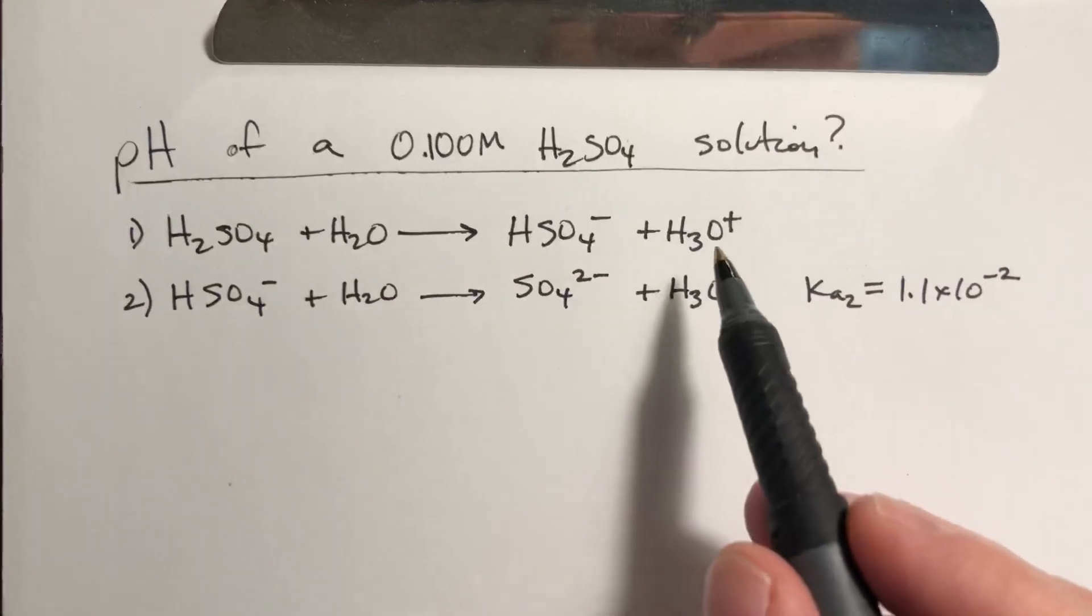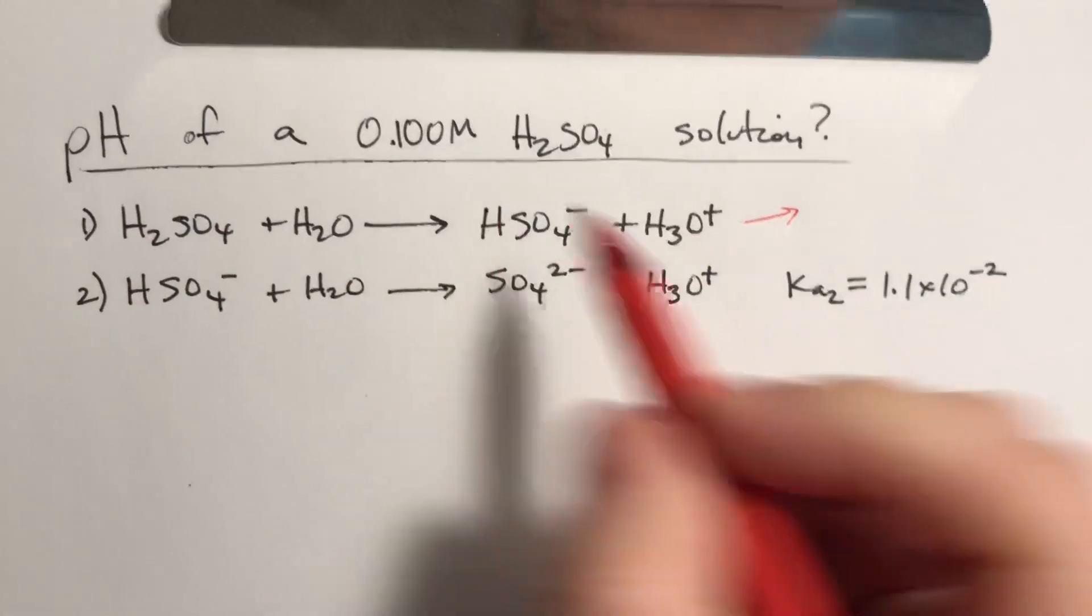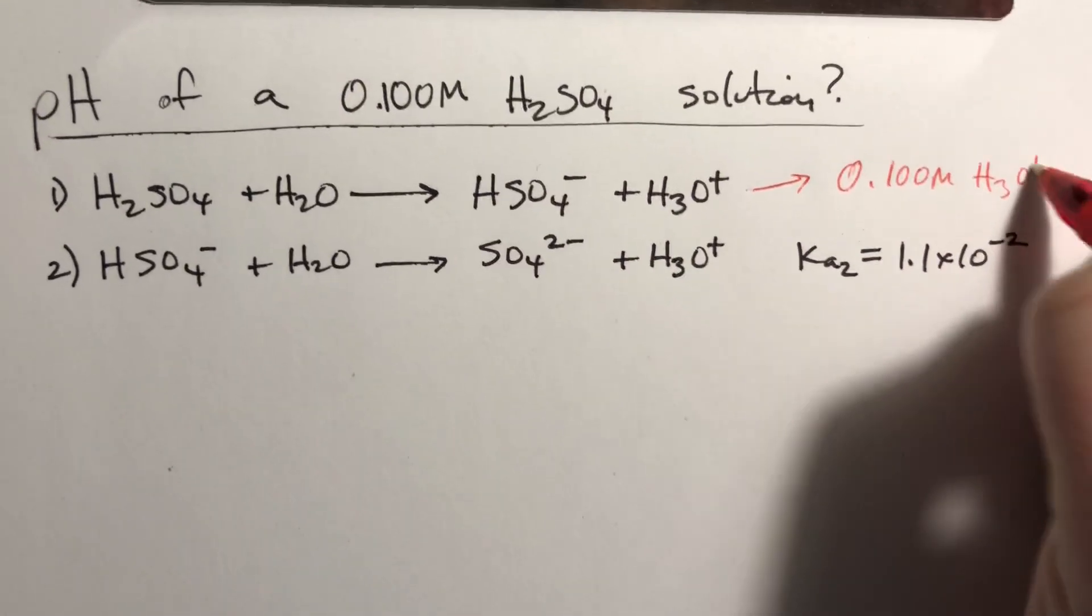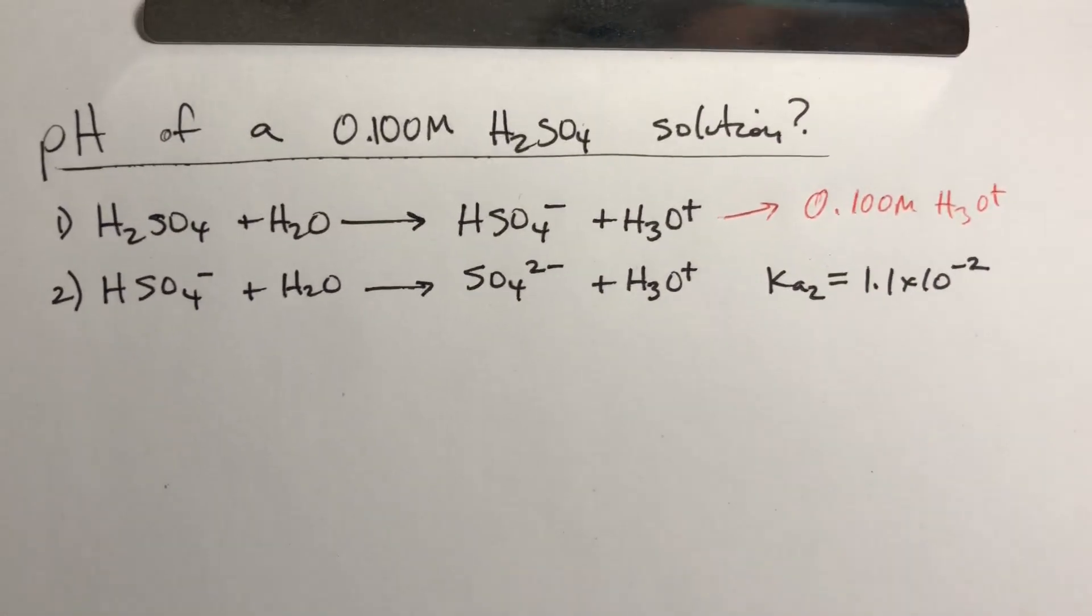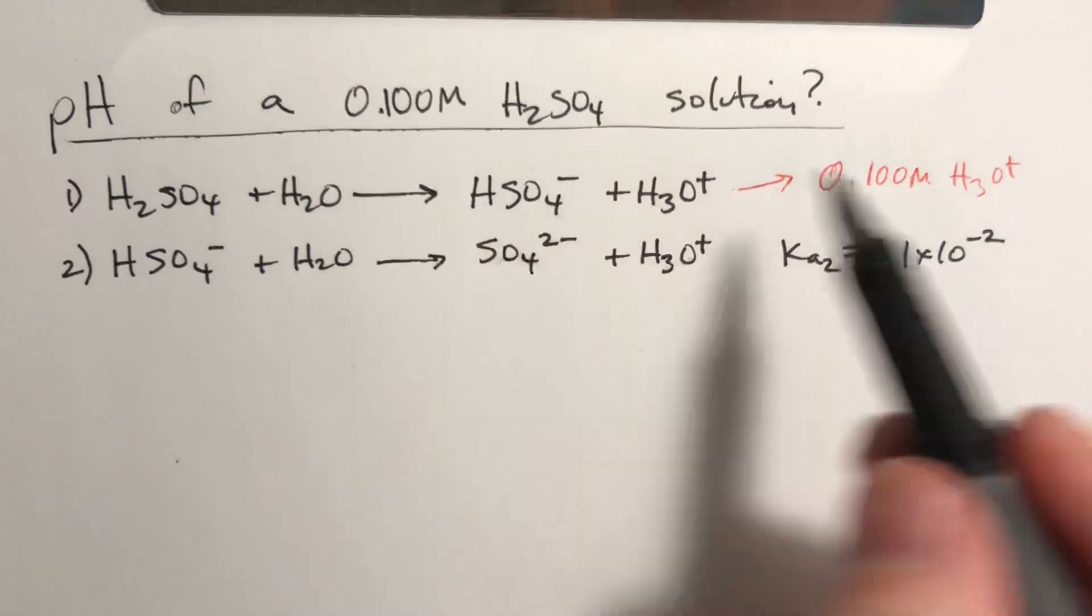So the first equivalent, essentially what this tells us is this means that from this first reaction we are going to have 0.100 molar of H3O+. Not surprising, it's a strong acid, it goes to completion, so since that's 0.1, this is 0.1.